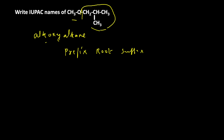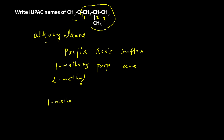For numbering, we start so that the alkoxy group gets the lowest number. Numbering starts: 1, 2, 3 — so that is 1-methoxy. There is also a methyl substituent at the second position, giving 2-methyl. The root is 3 carbon atoms, so it is prop-, and the suffix is -ane since there is no double or triple bond. The name of this compound is 1-methoxy-2-methylpropane.